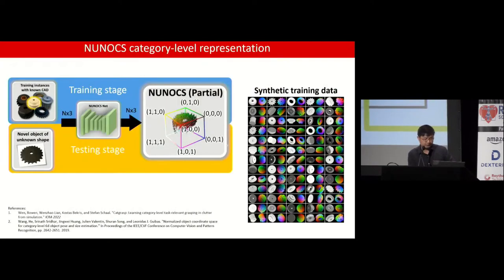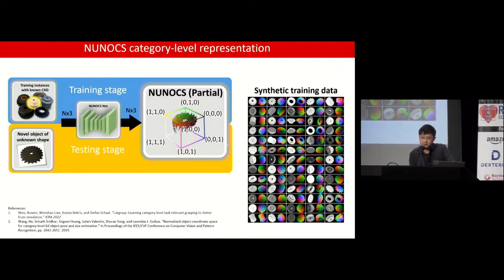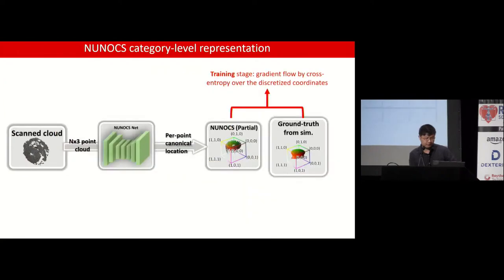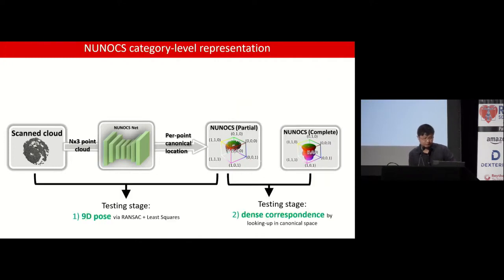Let's look at offline NUNOX learning. We use a neural network to associate between training instances and novel unseen instances. During training, we put the training instances into simulation and generate large-scale synthetic training data with domain randomizations. The network is only trained on synthetic data and will be directly applied to the real world for novel unseen instances. The NUNOX net takes as input the partially-scanned point cloud and predicts the per-point canonical location. During training, supervision is the cross-entropy loss over the discretized coordinate space. During testing, given the predicted point cloud in canonical space, we can compute two byproducts: the 9D poses and dense correspondence between different instances within a category.